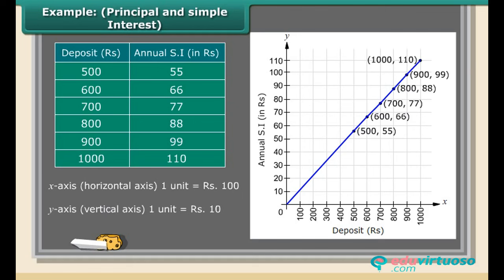We get a graph that is linear. 1. For rupees 500 on x-axis, we get interest to be rupees 55 on y-axis. 2. For rupees 88 on y-axis, we get the deposited amount rupees 800 on x-axis.